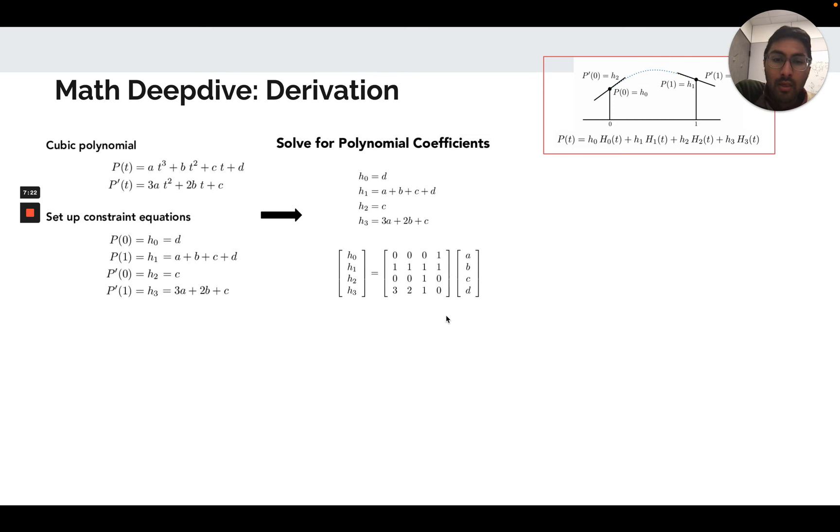These constraint equations then get represented as a matrix. So the first row, if we read it off, 0, 0, 0, 1, would multiply it against this column vector. This vector multiplication will result in the coefficient d, which is the first equation. Then for the second one, it's 1, 1, 1, 1, because we're in the second constraint summing up all of the coefficients. But this matrix equation allows us to map from coefficients of the polynomial to h0 through h3 when we want to solve the inverse problem. We're given h0 through h3.